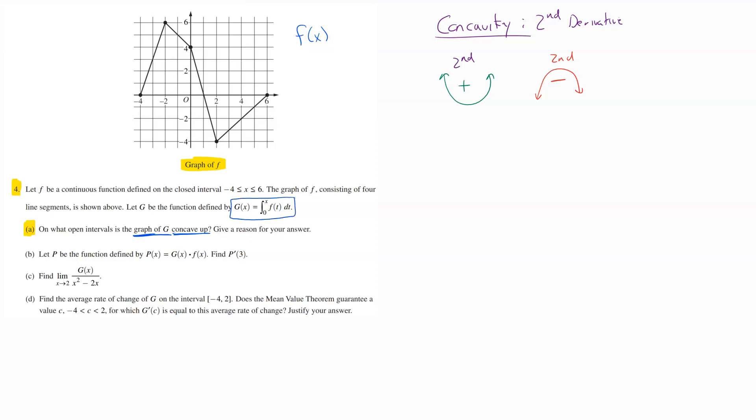Well, we can see here that they are telling us that G of X is equal to the integral from zero to X of F of T, DT. And in order to find out the concavity on G, we need to find out the second derivative of G. That's what's going to tell us how to read off concavity.